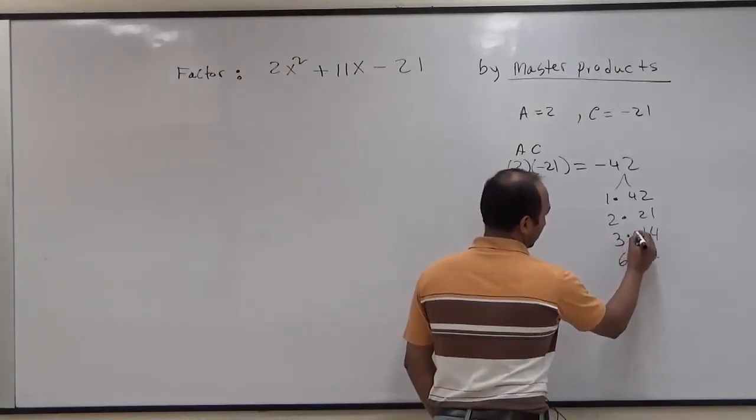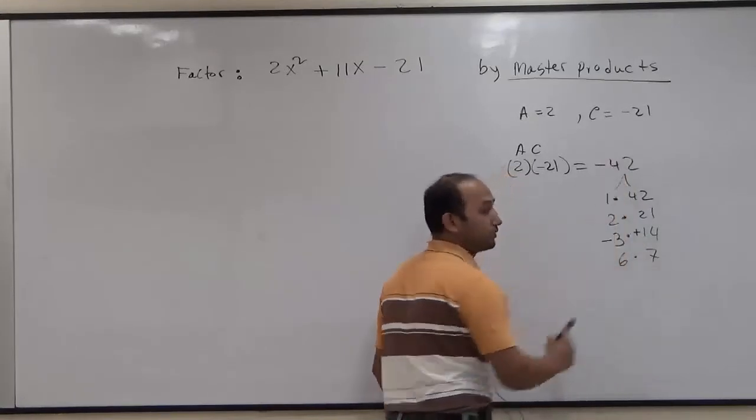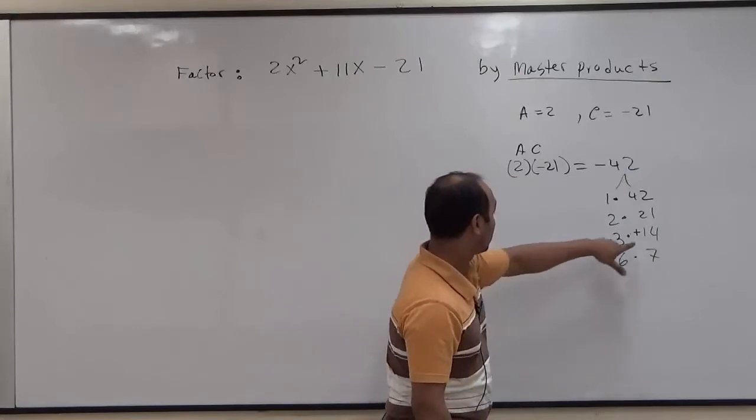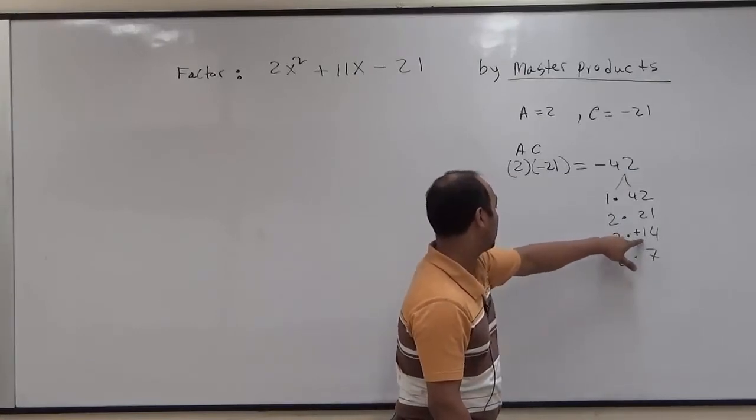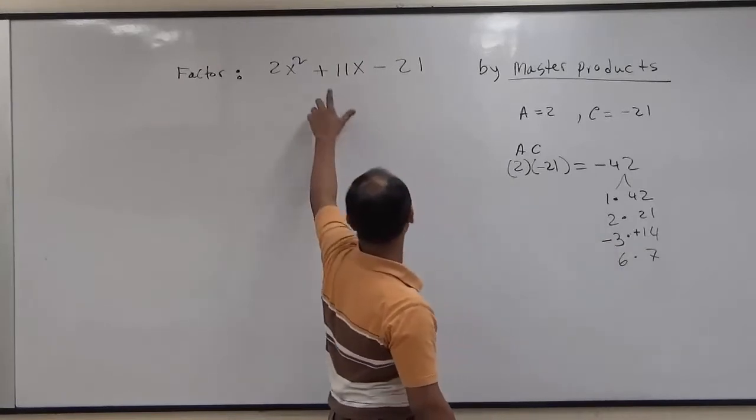Positive 14 times negative 3 will give us negative 42. Also, we need to check to get the middle term right. So positive 14 plus negative 3 will give us positive 11.